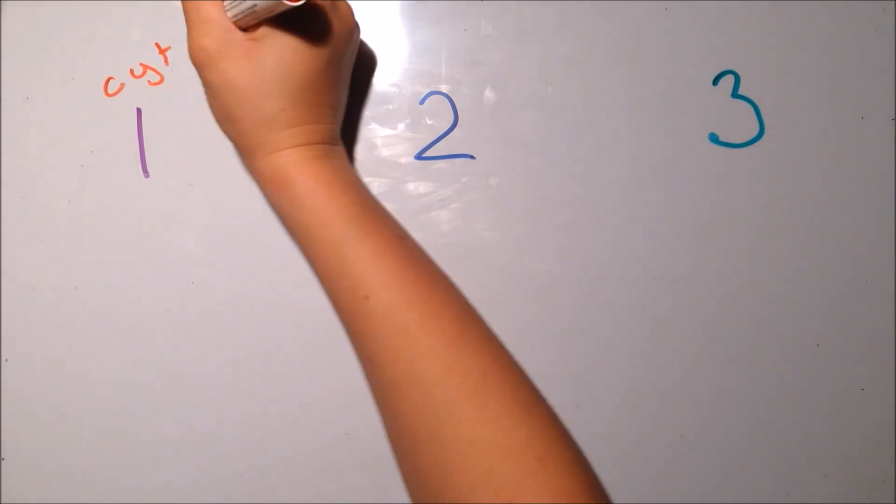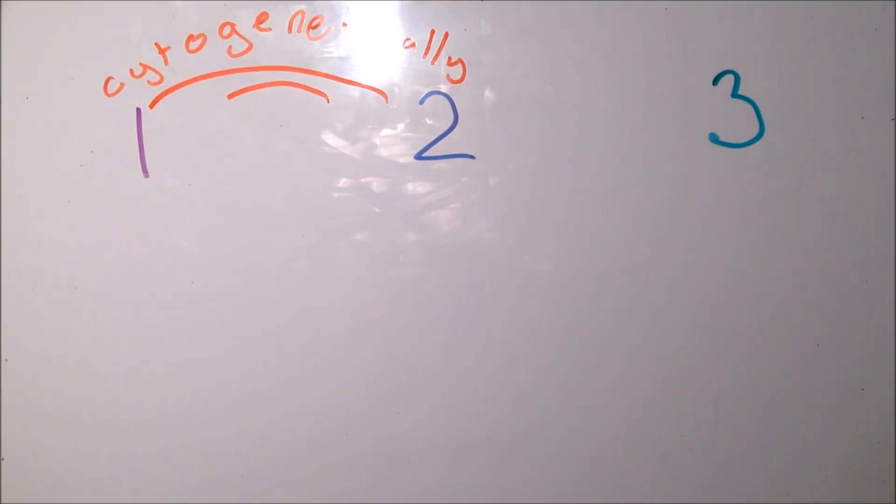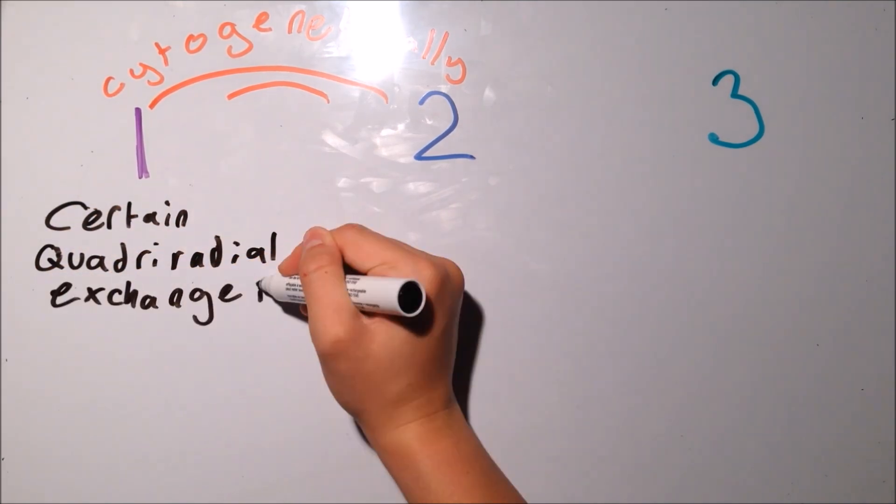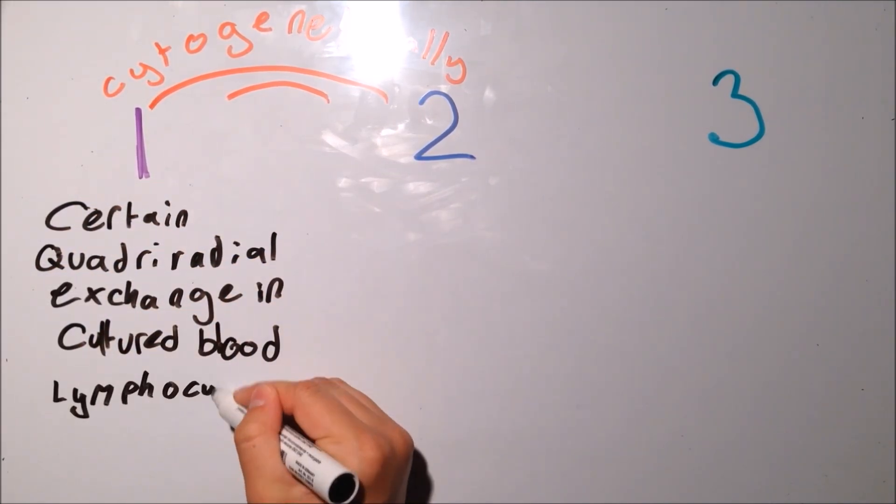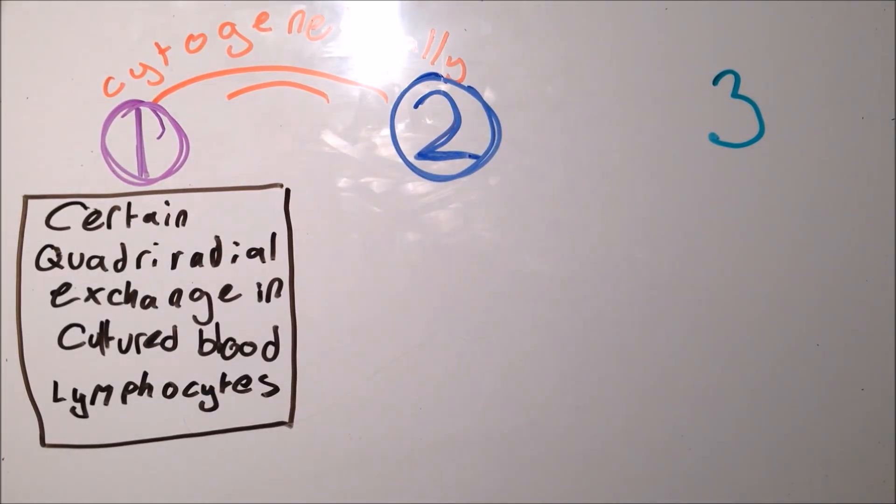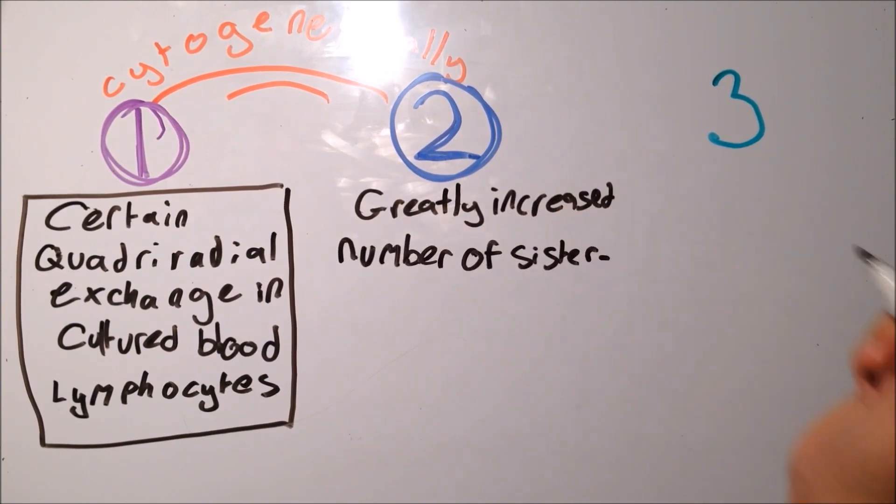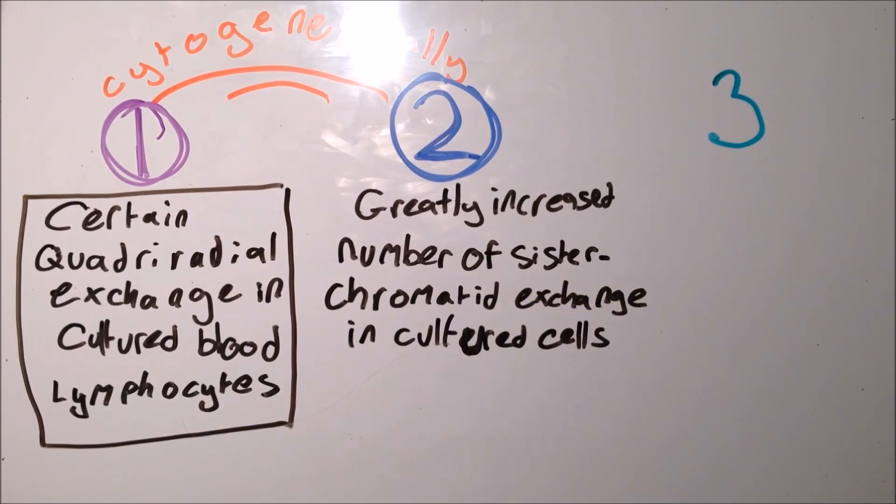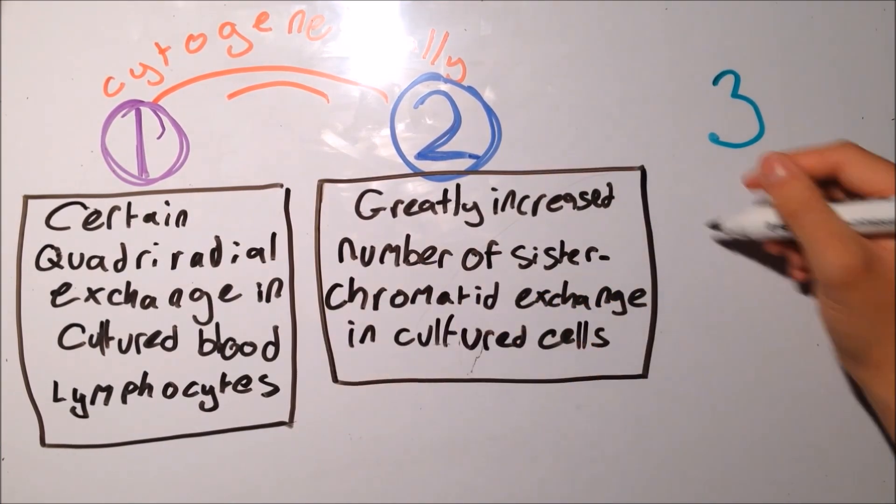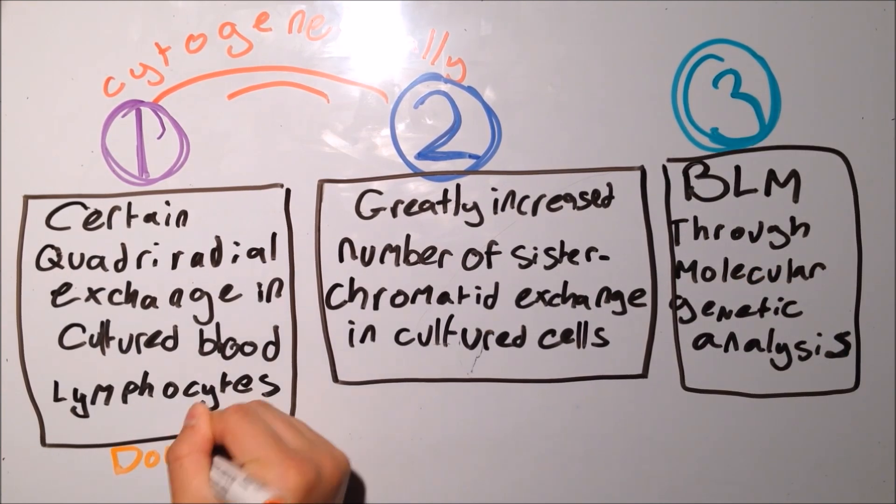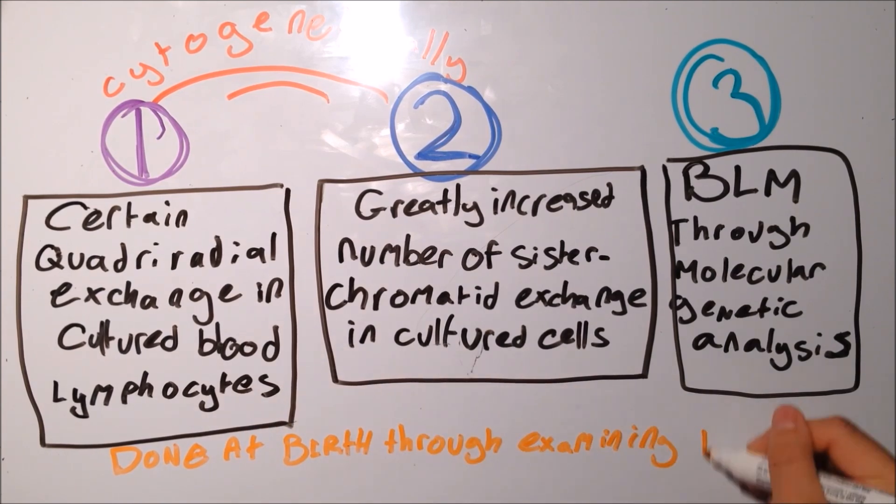There are three ways that Bloom Syndrome can be diagnosed. Two of the methods used to diagnose Bloom Syndrome are done cytogenically, with one of them being a certain quadrilateral exchange in cultured blood lymphocytes. The other cytogenic method of diagnosing Bloom Syndrome is noticing a greatly increased number of sister chromatid exchanges in any type of cultured cell. The third method is done by examining the BLM through a molecular genetic analysis. These methods of diagnosing Bloom Syndrome can be done at birth and can be done by examining the DNA.